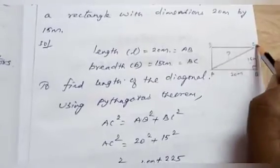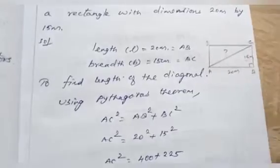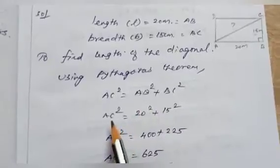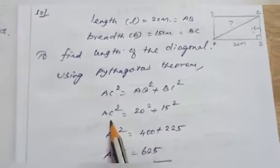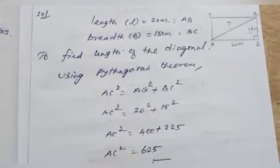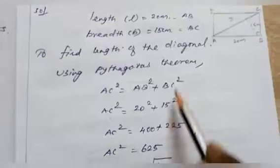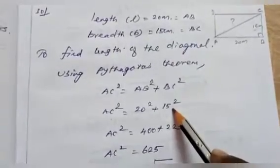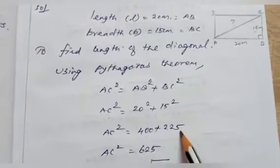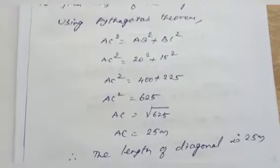AC² = AB² + BC². We need to find the value of AC. So AC² = 20² + 15². AC² = 400 + 225. Therefore AC² = 625.